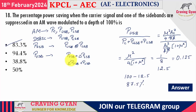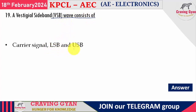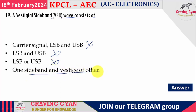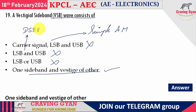Nineteenth question: a vestigial sideband wave consists of which components? Option 1 — carrier, LSB, and USB — is simple AM. Option 3 — LSB or USB — is single sideband modulation. The correct answer is option D: one sideband and a vestige of the other.